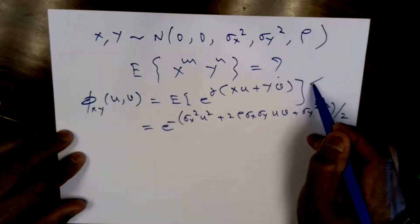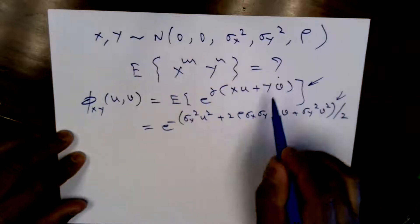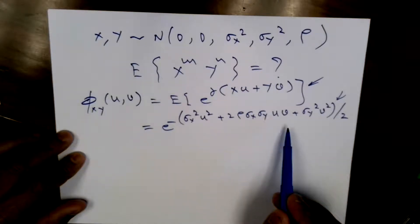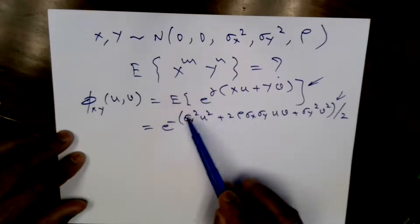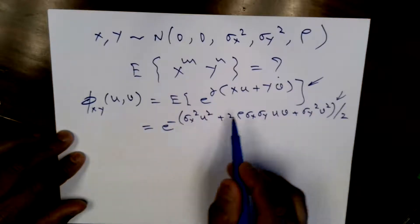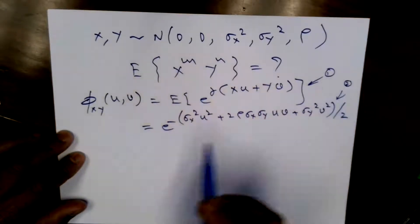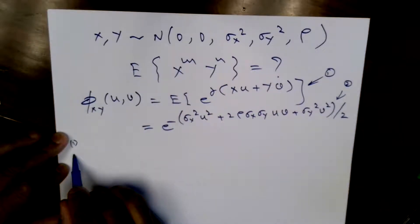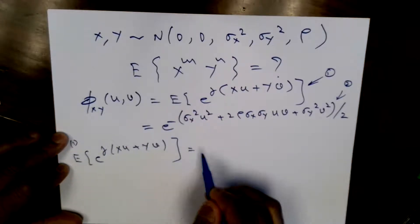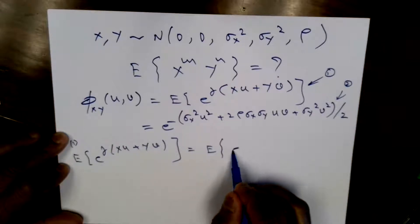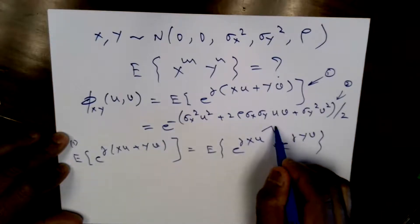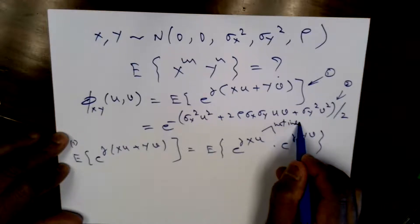The idea is that we have two expressions: one is the definition, one is the functional form because x and y are jointly Gaussian. We're going to expand both of them and compare coefficients. Starting with the definition: E[e^(jxu) · e^(jyv)]. Remember, these two are not independent, so it's not simply the product of the individual expectations.